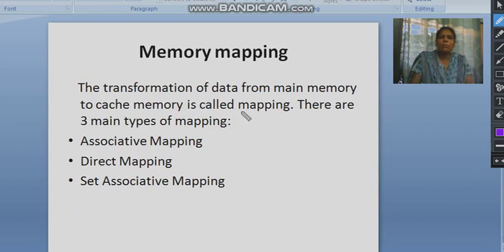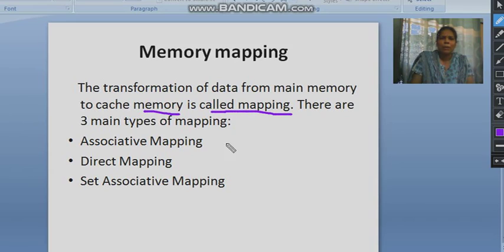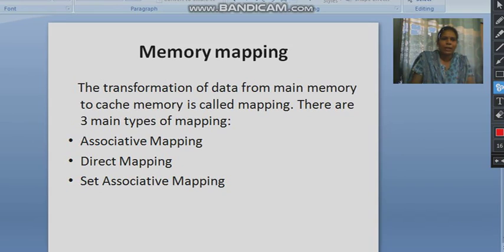Now the memory mapping concept. Memory mapping means the transformation of data from main memory to the cache — when we map the contents of main memory to the cache memory, this is known as mapping. It is basically of three types: associative mapping, direct mapping, and set associative mapping. These are the three mapping techniques for how we map cache contents with the main memory.